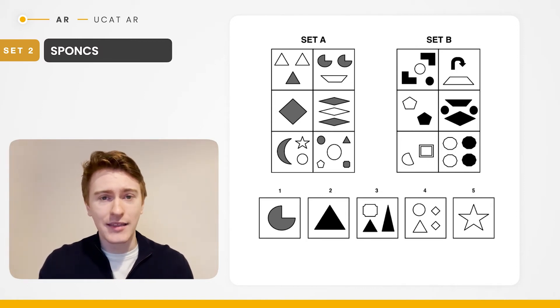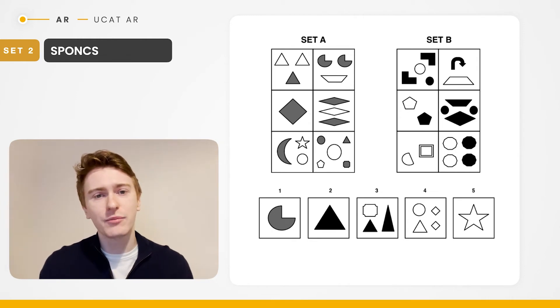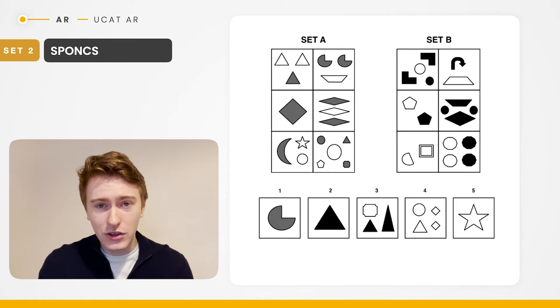So you can see in set A, the top left corner, you've got three identical triangles. That's designed to make it easier for you to count. Remember abstract reasoning is about spotting the pattern, not necessarily wasting time counting things. So the UCAT is trying to help you. It's trying to test your pattern spotting. So be aware of these triggers as you go through abstract reasoning practice.